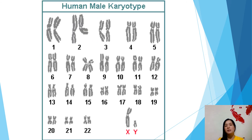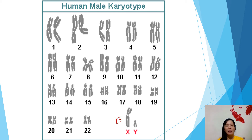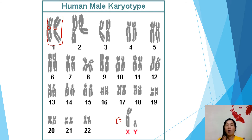This is our human male karyotype. You can see the homologous chromosomes are arranged from the longest to the shortest, up to number 22. Pair number 23 is our sex chromosome — XY for male, XX for female. The first pair of homologous chromosomes have the same length and the same position of the centromere. During the exam, if they ask you to arrange homologous chromosomes, always pair up chromosomes with the same length together.